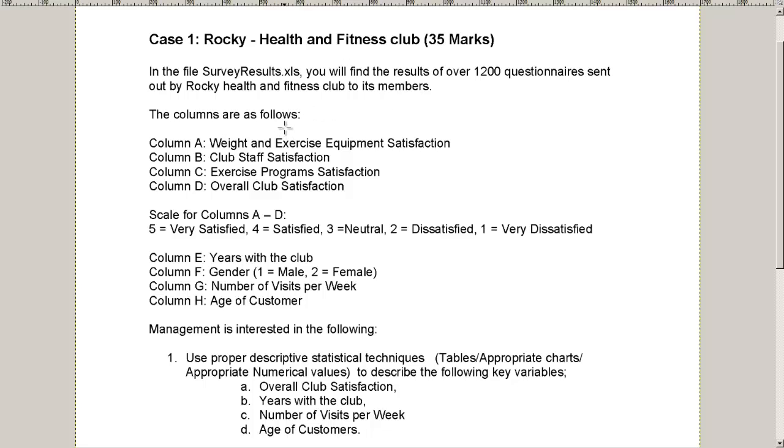We've got different columns, A, B, C, and so on, all the way down to H, where for each one of these members of the fitness club, they're keeping track of different results from a survey. For example, in column A it says weight and exercise equipment satisfaction. You'll see down here that they have a numbering code. 5 is very satisfied, all the way down to 1, which is very dissatisfied.